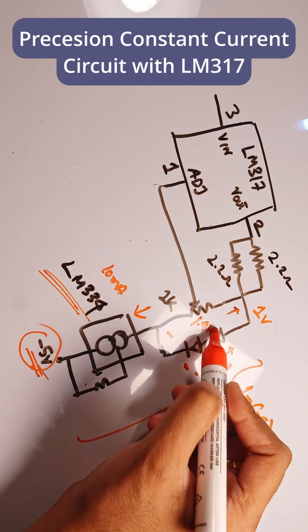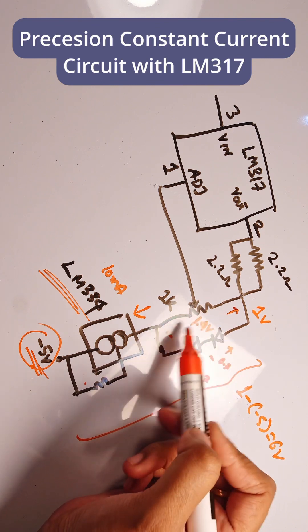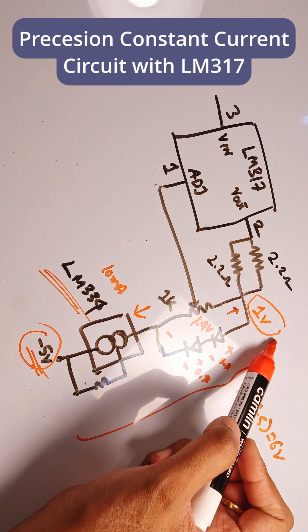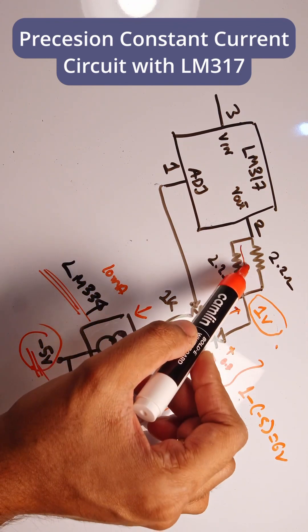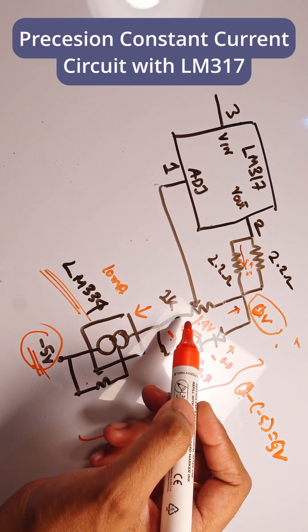So the resistor is seeing 1.4 volts irrespective of the voltage in here and irrespective of the current that is flowing through here. This is very important. So we can set the current ranging from 0 milliamps, less than or equals to i_out.